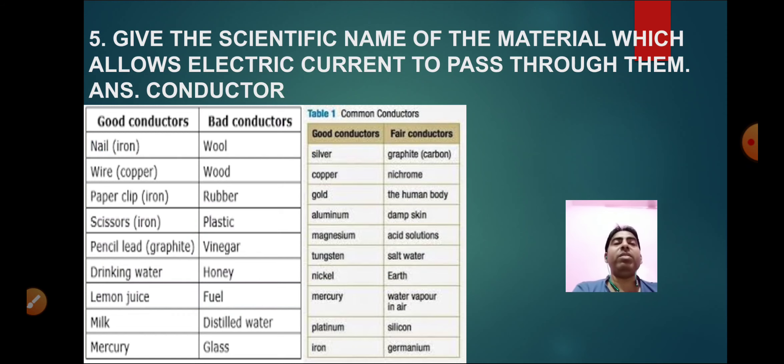Now moving towards the fifth question: Give the scientific name of a material which allows electric current to pass through them. The scientific material is called conductor. Conductors are those materials which allow electric current to flow through them.